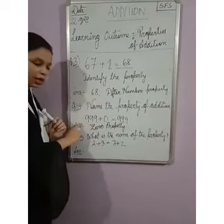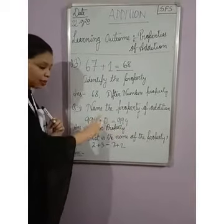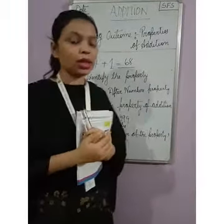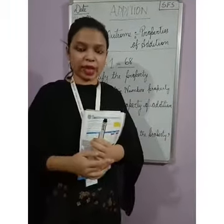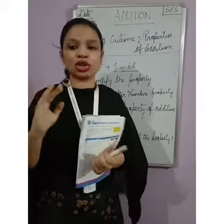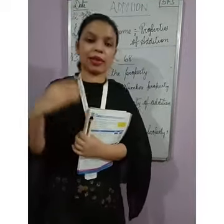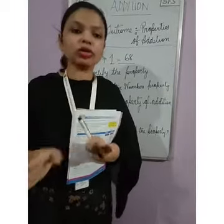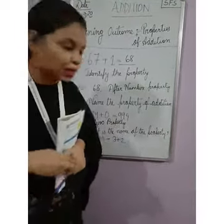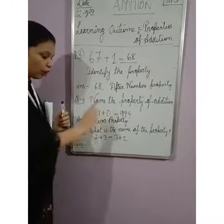What is the zero property? When we add 0 to a number, the answer is the number itself. We took 999 and we got the same answer because we added 0. Zero is a number but it has no value — adding 0 to any number makes no difference; it will remain the same. So the property used is the zero property.